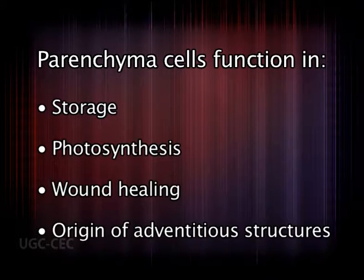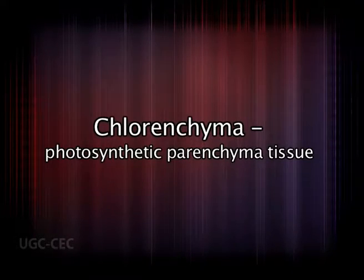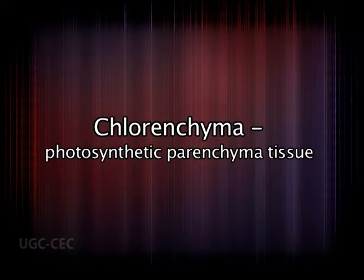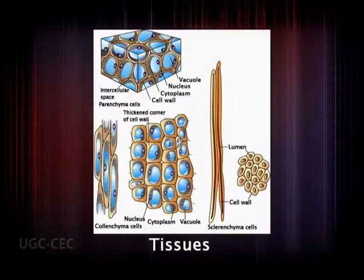Parenchymatous cells are thin-walled and more or less spherical; however, cells with living protoplasts push up against each other shortly after they are produced and assume other shapes, often polyhedral. They form continuous tissues in the cortex of stem and root, and in the leaf mesophyll. Parenchyma cells may live for many years and function in storage, photosynthesis, wound healing, and origin of adventitious structures. Photosynthetic parenchyma tissue is called chlorenchyma.